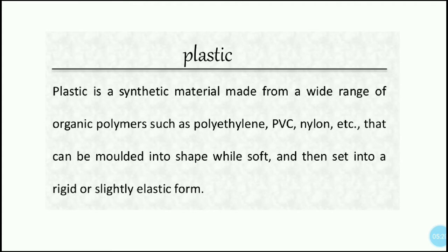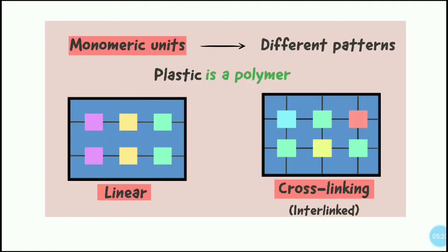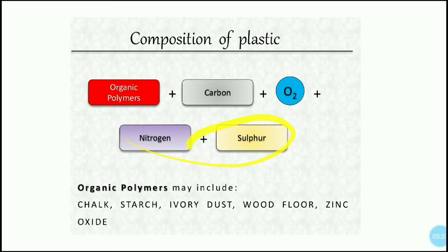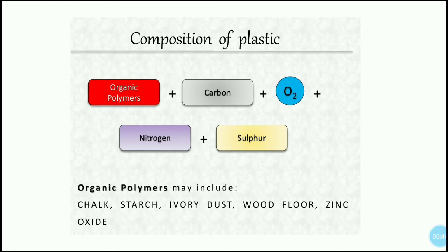Now let's understand the composition of plastic. The composition includes not only polymers but also carbon, oxygen, nitrogen, and sulfur. Organic polymers may also include substances like chalk, ivory dust, wood flour, and zinc. This is the composition of plastic.